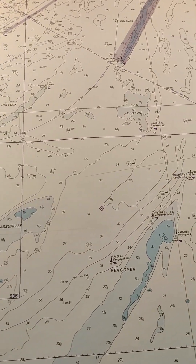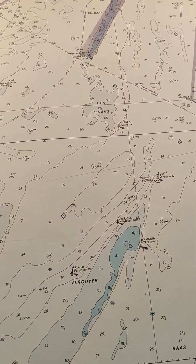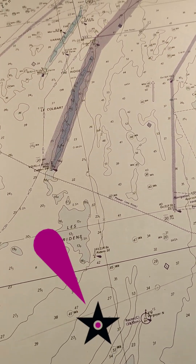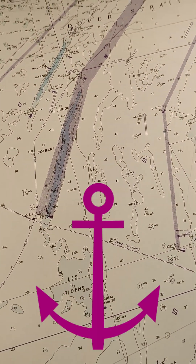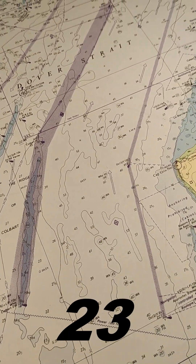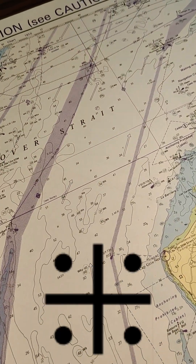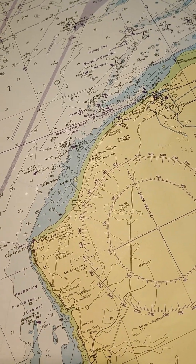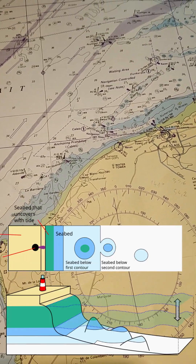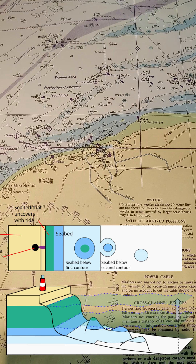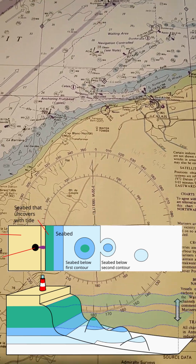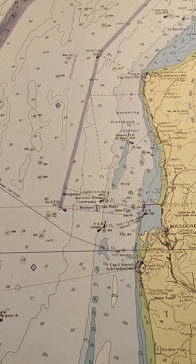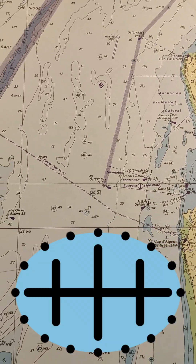Nautical charts, the mariner's indispensable tool, are adorned with a variety of symbols. Each one, whether it represents depths, buoys, rocks, or wrecks, is a crucial guidepost in the vast ocean. Depth contours and soundings reveal the water's depth, guiding sailors away from perilous shallows and underwater hazards.